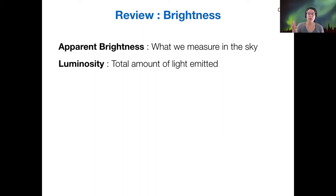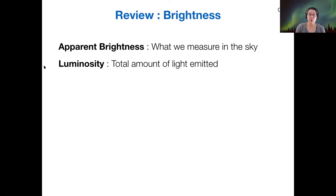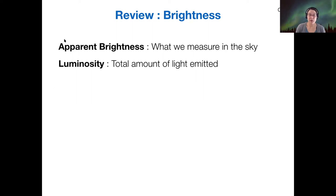To review a few concepts we're going to need for the next rungs on the ladder: the first topic is brightness. There's a difference between apparent brightness — what we measure in the sky — and the luminosity of an object, which is the total amount of light that object emits. This distinction is really important because by combining these together with the inverse square law, we can calculate distance for objects using various methods.